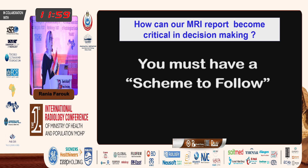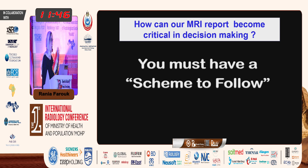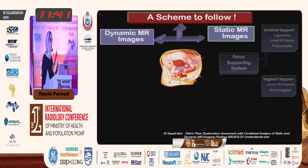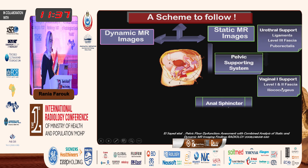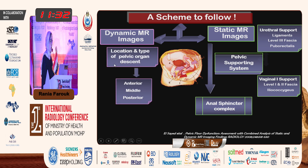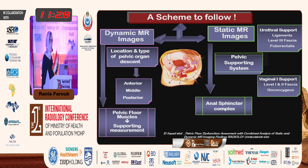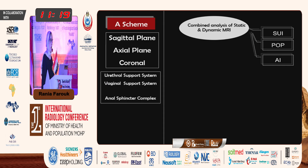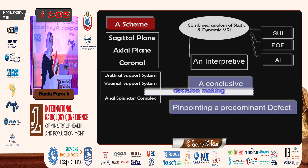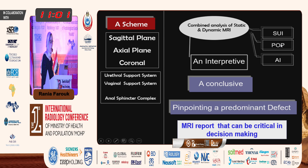My aim is to raise your attention and enthusiasm so that when you return to your hospital you are interested in establishing the pelvic floor unit. You must have a scheme to follow: in the static images, evaluate the pelvic supporting structures and anal sphincter complex; in the dynamic, assess the descent of the pelvic organ and the pelvic floor muscle. A simple template — you can save it on your mobile and follow it. Now let's learn how to make a conclusive MR report critical to decision making in SUI, POP, and anal incontinence.